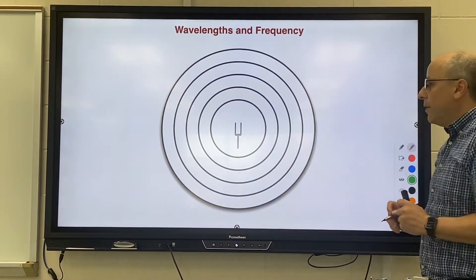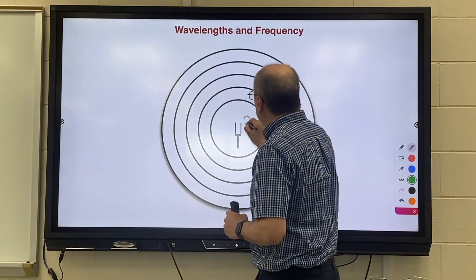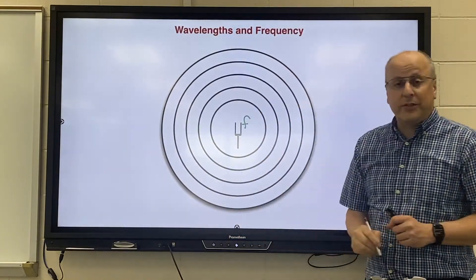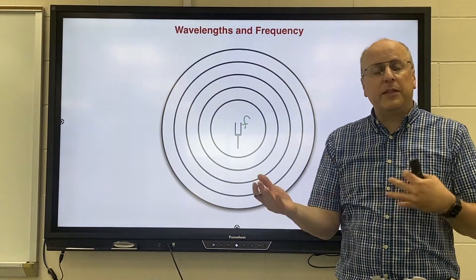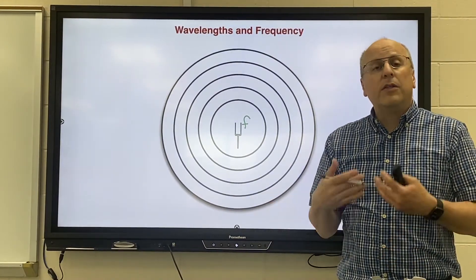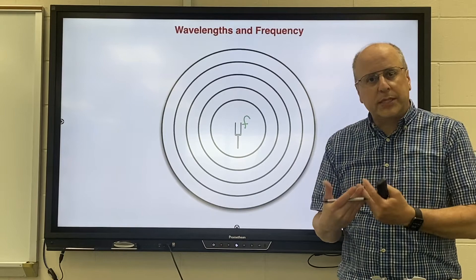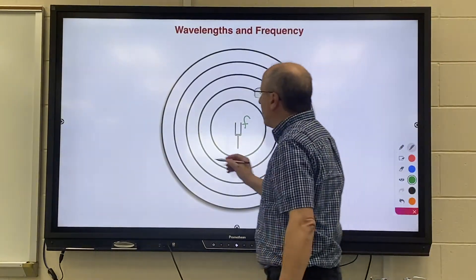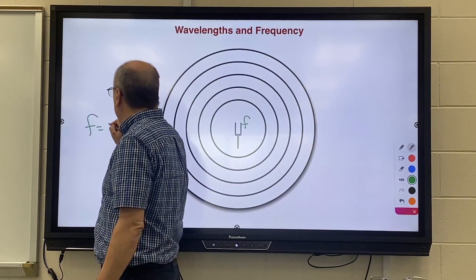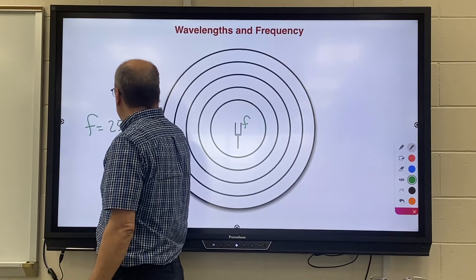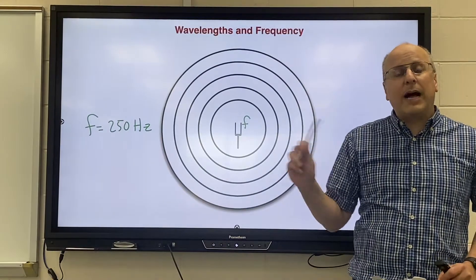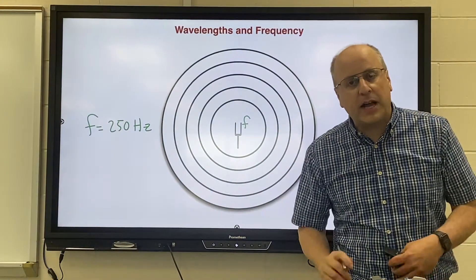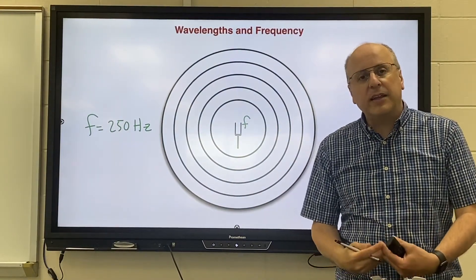I want to start out by making sure you understand where they both come from. Frequency comes from the source that is producing the wave, be it a tuning fork or be it something that is producing light. The frequency is source dependent. So the tuning fork will have a certain frequency. Remember frequency is measured in Hertz, so maybe that tuning fork will oscillate 250 times every second. That is what we call frequency, determined by the source.